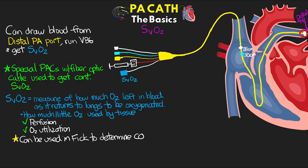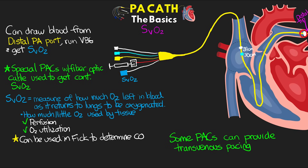Finally, some pulmonary artery catheters can also provide transvenous pacing for atrial, ventricular, or a combination of both pacing modes.